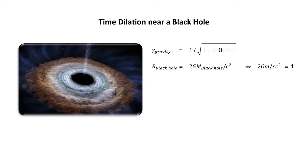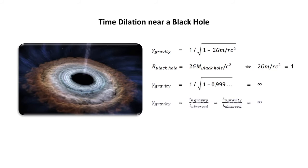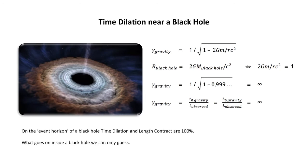So let's say we are very close to the black hole. We calculate 1 minus 0.999... with an infinite number of 9's, and then we see that there is a gravitational time dilation that is infinite. So the time dilation is infinite, and also the length contraction is infinite. On the event horizon — that's the edge of the black hole — the time dilation and length contraction are 100%. What goes on inside a black hole we can only guess; the concepts of time and length do not exist inside a black hole.